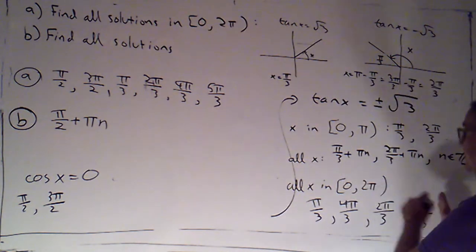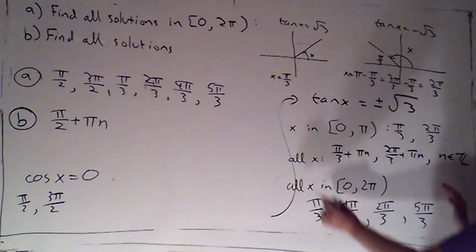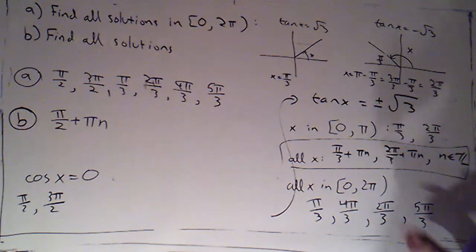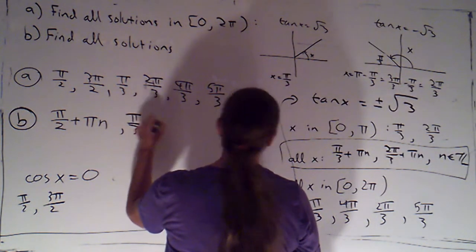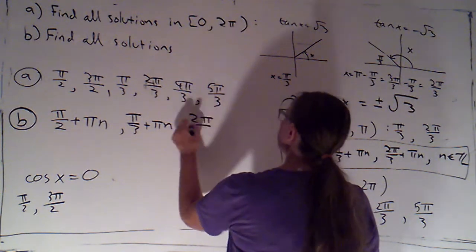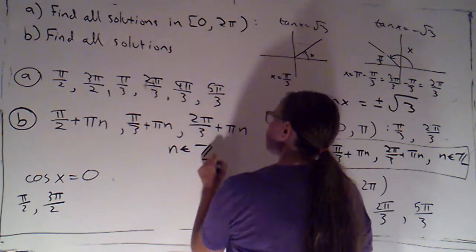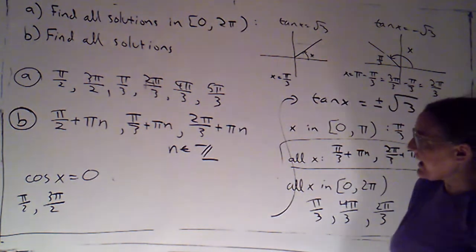And then, for all x, I don't need to come to each of these four and add 2 pi n. Although, that would be correct. It's much more concise to say I already found all the solutions for tangent. So, it was pi over 3 plus pi n and 2 pi over 3 plus pi n. In all cases, n is an integer.